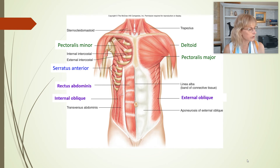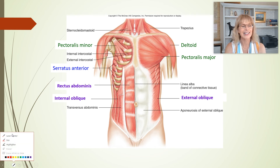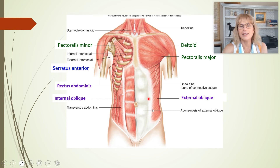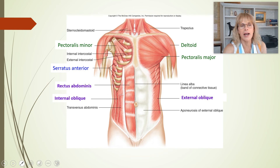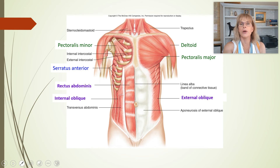Now we've got the torso muscles seen from the front. On this image, this side has just had the skin taken off, and the other side has had the skin removed plus a layer of muscles removed. Let's start with the deltoid. The deltoid is right here — if you got your flu shot, they generally give you vaccines right here into your deltoid muscle.